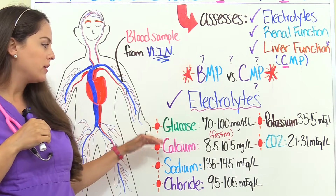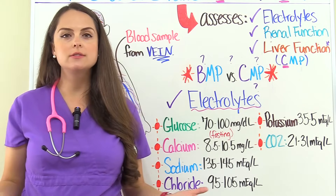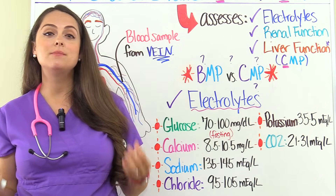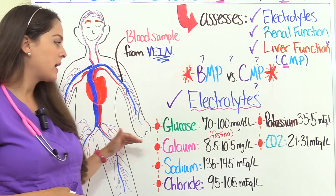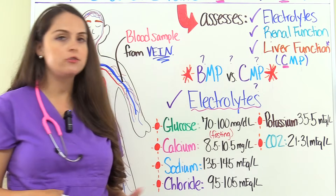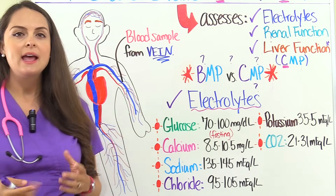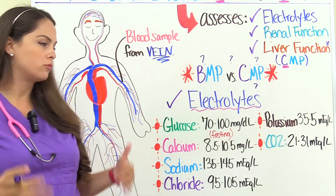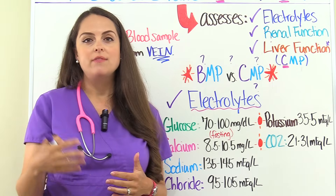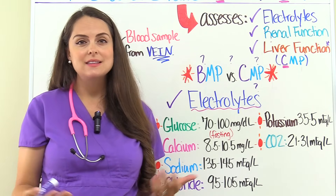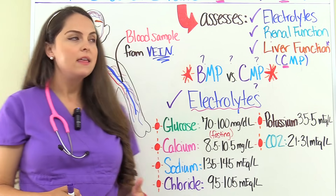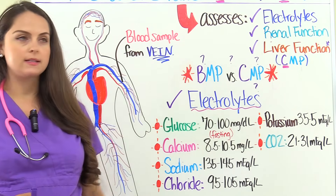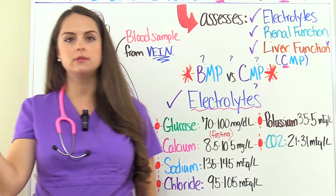The first electrolyte is glucose — essentially the amount of sugar in a patient's blood. A normal reference range is about 70 to 100 milligrams per deciliter, and this applies when the patient was fasting when blood was drawn. If the patient hasn't been fasting, this can be extended up to about 125 milligrams per deciliter. So let's talk about abnormal results — low versus high.